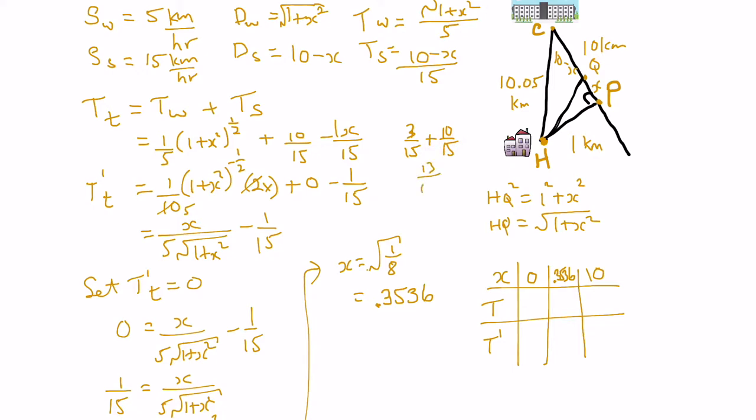Which if we put it into decimal form is 0.867, and that's that time if we walked H to P and then from P to C that we calculated earlier.